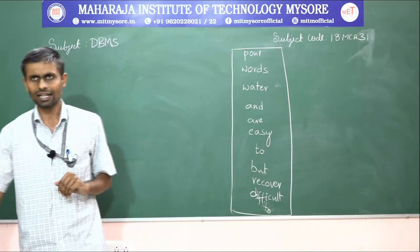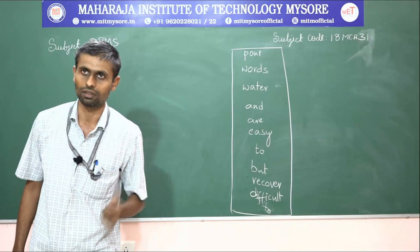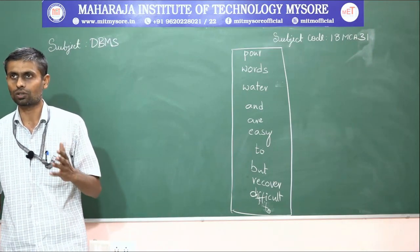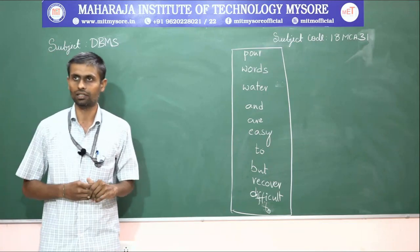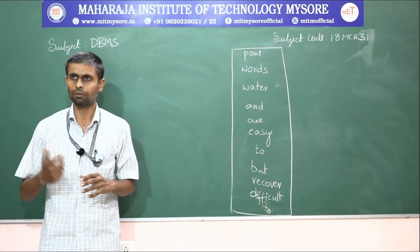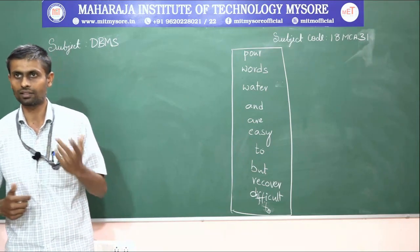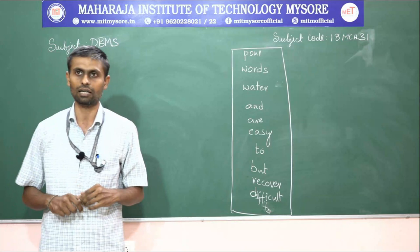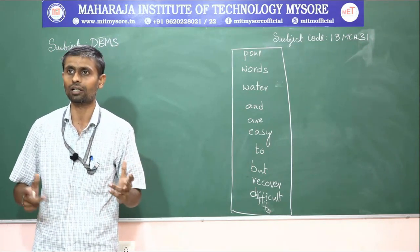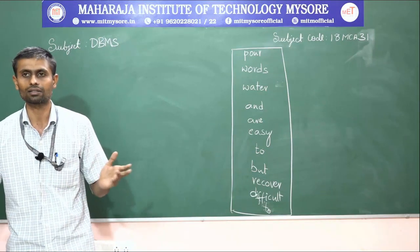Now let us look at the course learning objectives of DBMS — database management system — with course code 18MCA31 in VTU. With the help of this subject, students will be able to understand the fundamental concepts of database management systems, design an ER diagram scheme on relational tables, and write some queries.